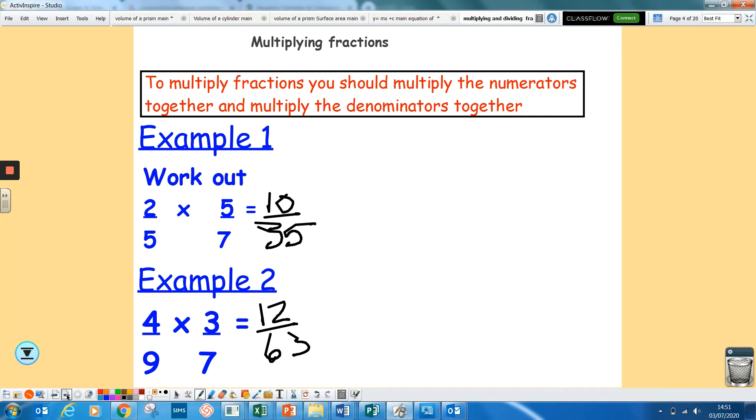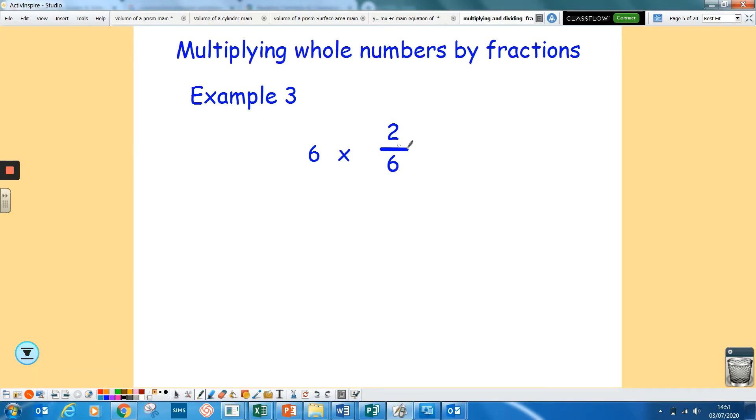If you get one with a whole number in, so 6 times 2/6 with a whole number, we can write as a fraction by writing a 1 underneath it. Now you can multiply the tops and bottoms to get 12 over 6, which 12 divided by 6 is 2.